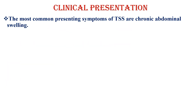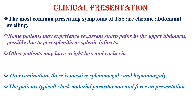The most common clinical presentation is chronic abdominal swelling. Some patients may experience recurrent sharp pains in the upper abdomen, possibly due to perisplenitis or splenic infarcts. Other patients may have weight loss and cachexia. On examination, there is massive splenomegaly and hepatomegaly.